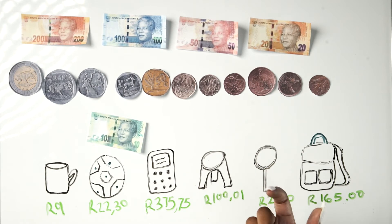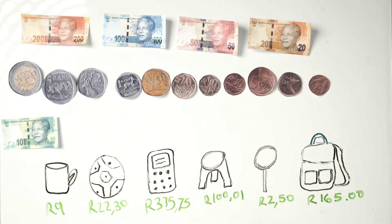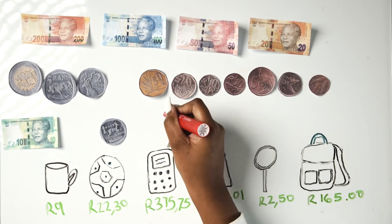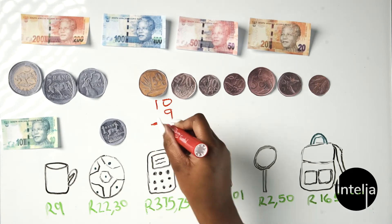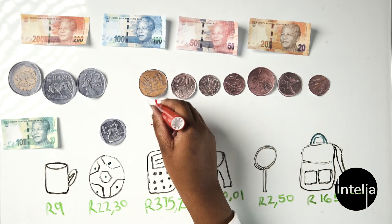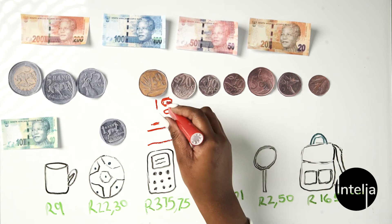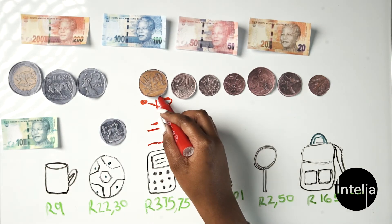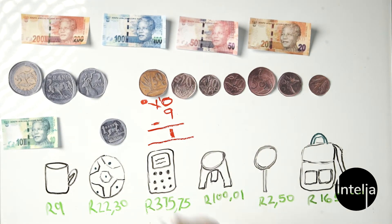They'd give you change — the difference between the cost and how much you gave the person. How much change do you think they would give you? One rand — that's correct! In a sum, you'd have 10 minus 9. Zero minus 9 is impossible, so you borrow from your neighbor; the neighbor is left with zero and you have 10. So 10 minus 9 is 1 rand.